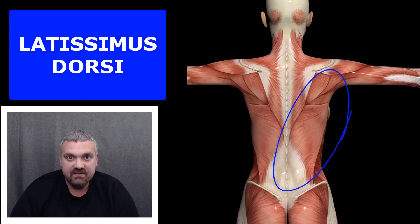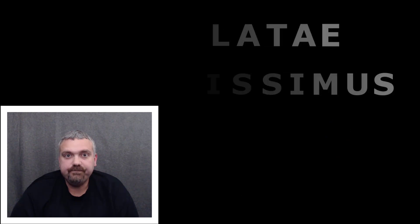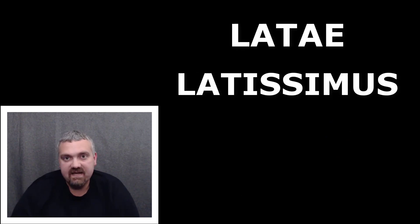Lata means broad or wide, while latissimus means widest. The key example here would be the latissimus dorsi muscle, which is the widest back muscle. Dorsum means back — so latissimus dorsi, the widest back muscle.